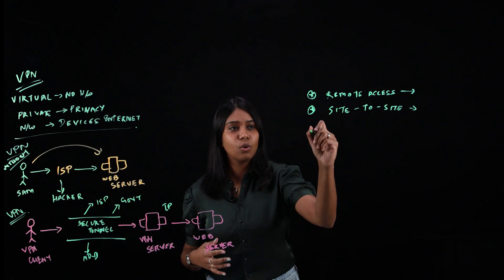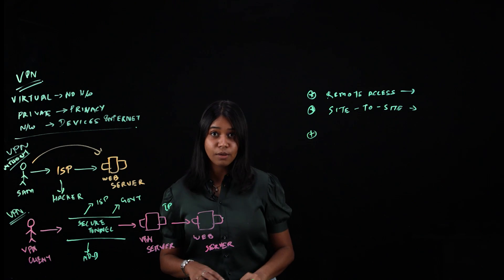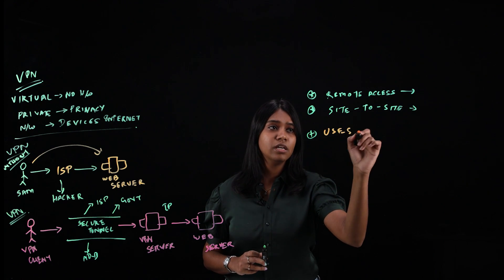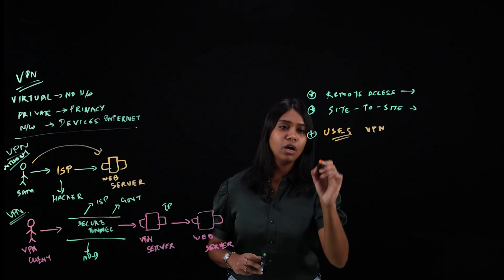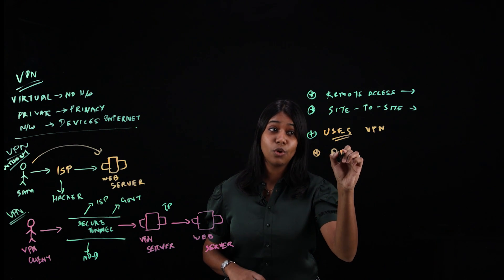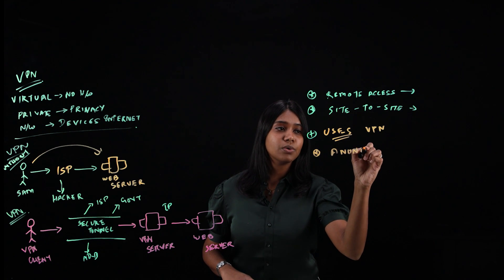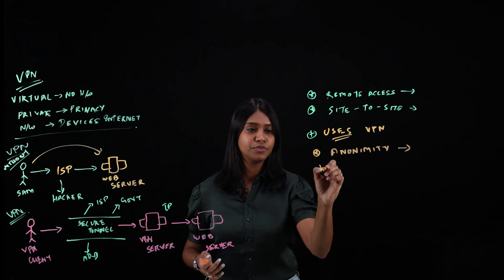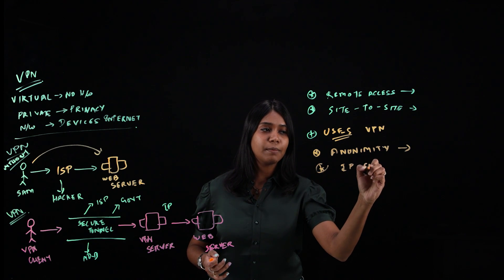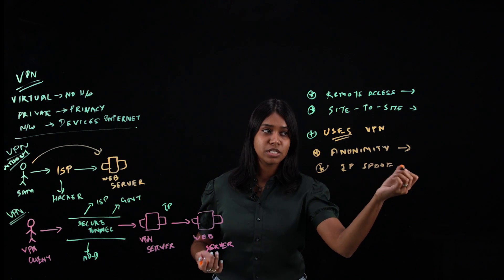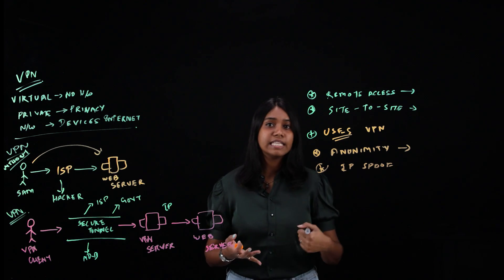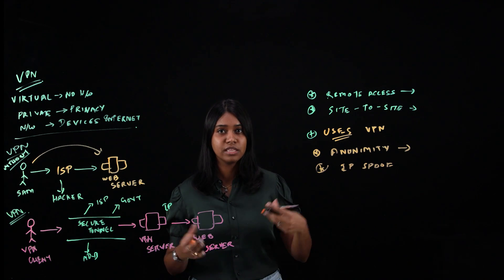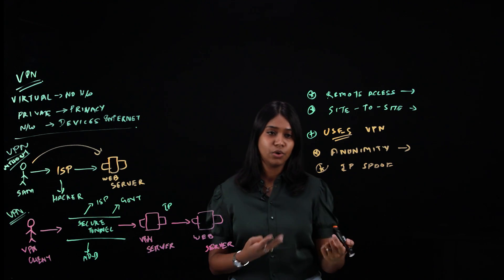And to conclude overall, let's talk about the uses of VPN, or basically the advantages. First, your anonymity. What happens is your IP is masked or spoofed. IP spoofing is happening. So your geolocation is protected and all your private data is encrypted. Your anonymity on the web is preserved, thus giving you better privacy and security.